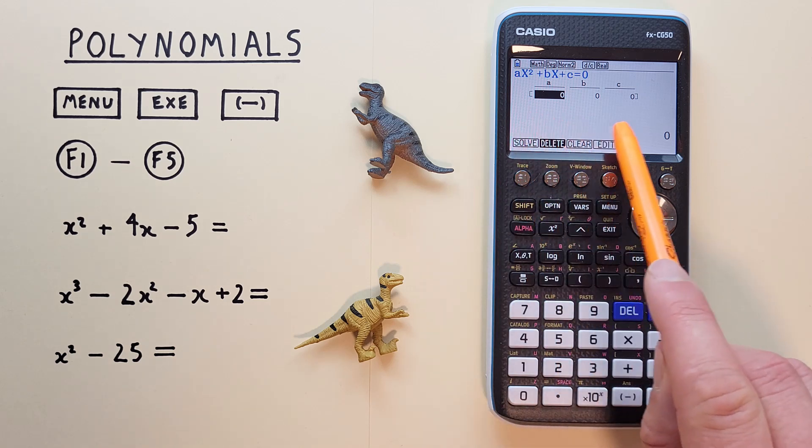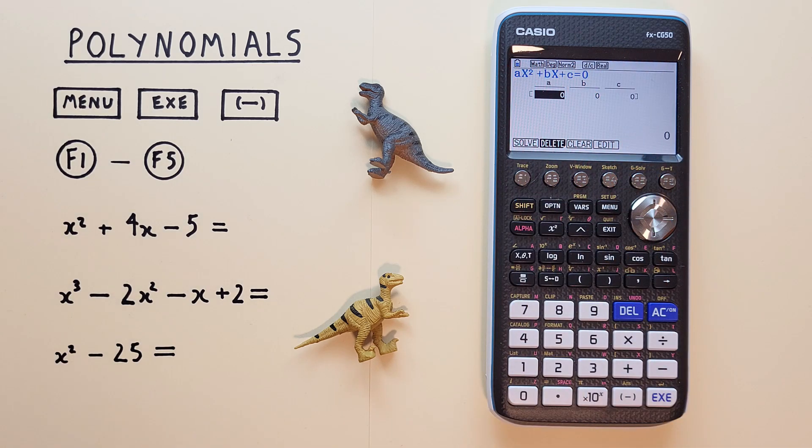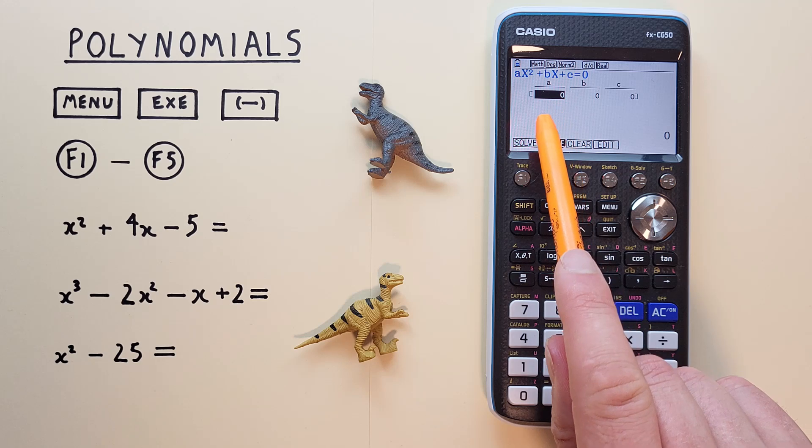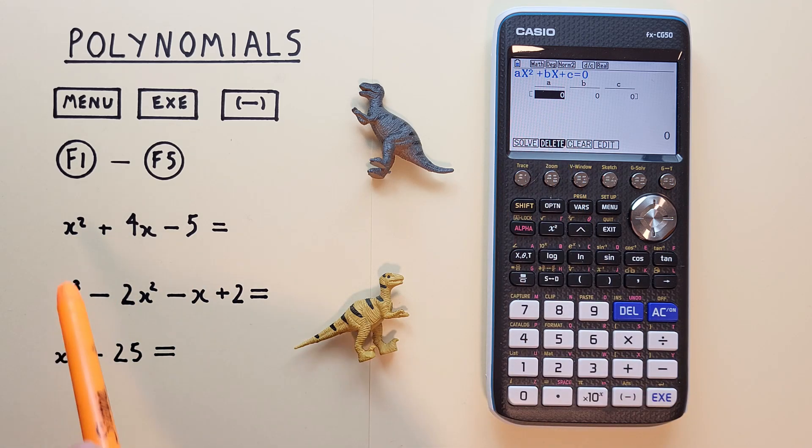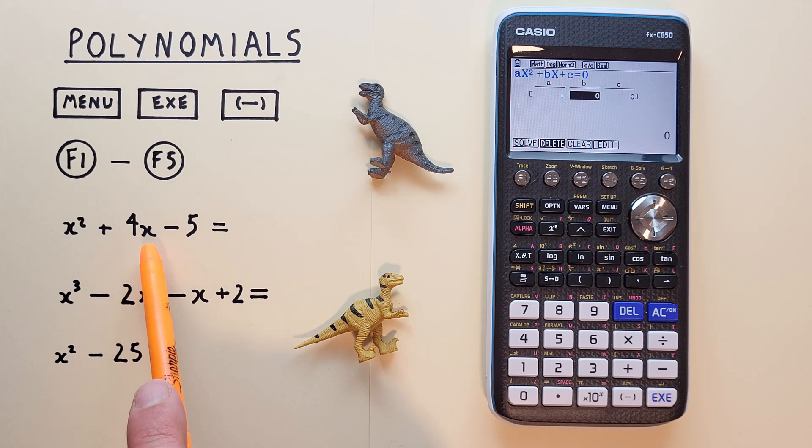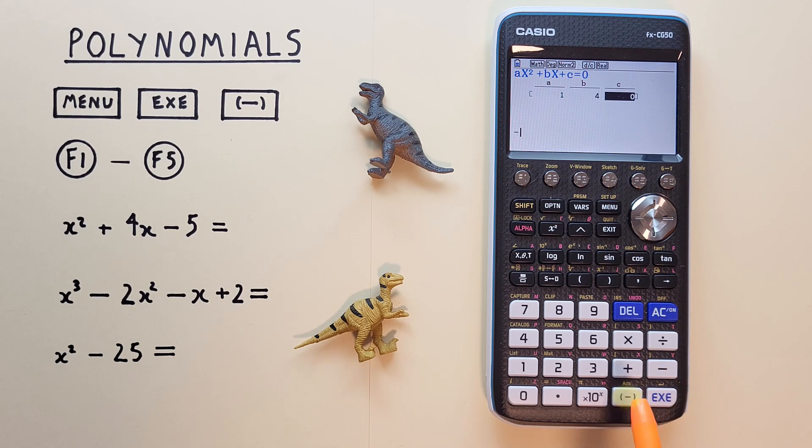And now we can begin entering our numbers. So for our equation, we have x squared plus 4x minus 5. And we start with a for the x squared number. Since there's no number in front of the x squared, we assume 1 there. For b, or the x, we have 4x. So we put 4 there. And then for c, we have negative 5. So for that we use the negative key here, not the subtraction key, the negative key. And then 5. And hit exe.